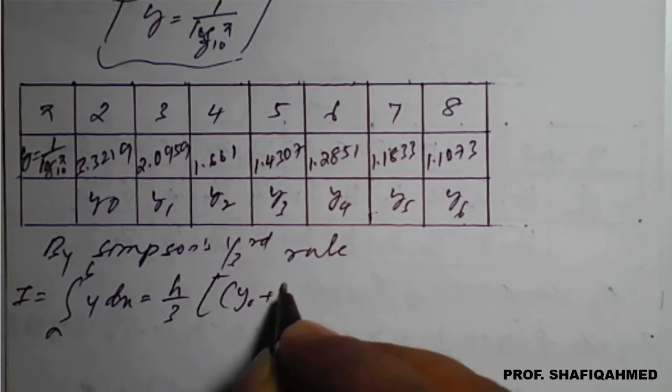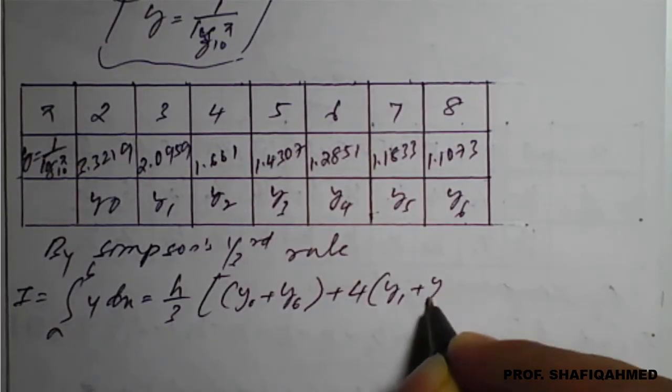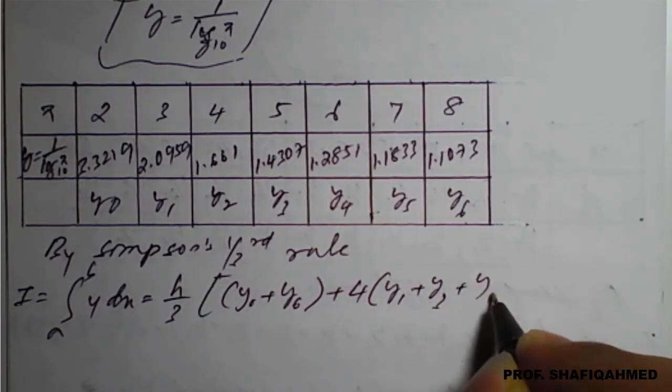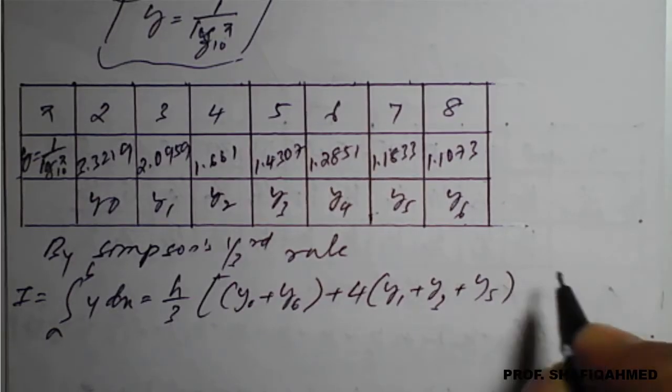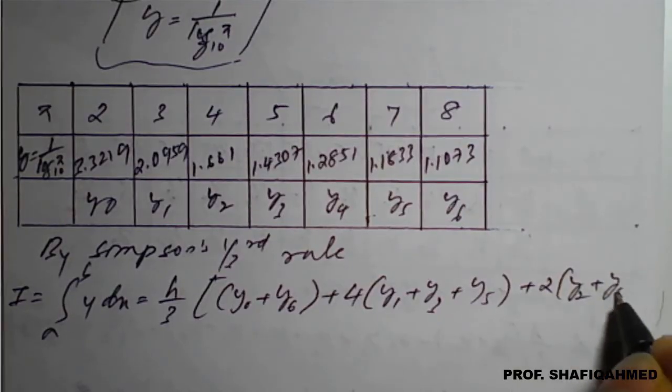y0 plus the last one, that is y6, plus 4 times y1 plus y3 plus y5, plus 2 times y2 plus y4.